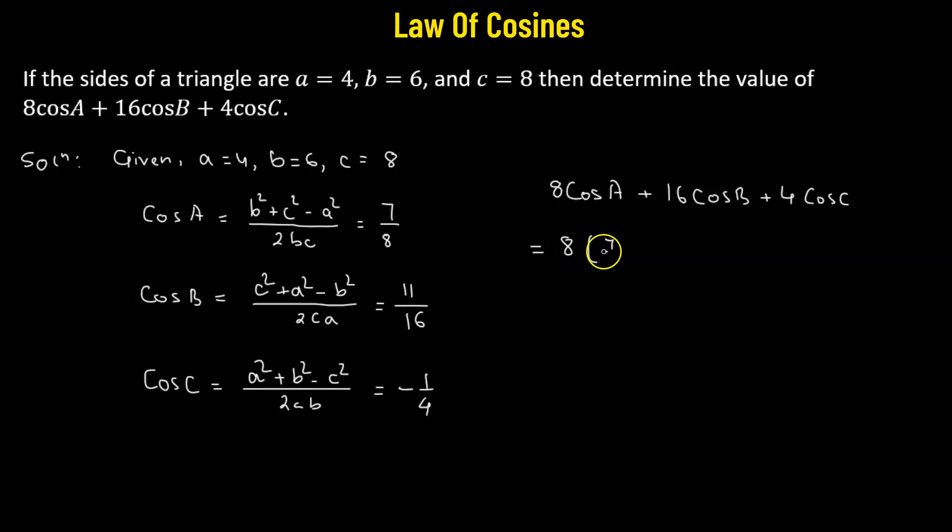We have 8 multiplied to 7 over 8 plus 16 multiplied to 11 over 16, plus 4 multiplied to negative 1 over 4. That's going to give us a value of 7 plus 11 minus 1.